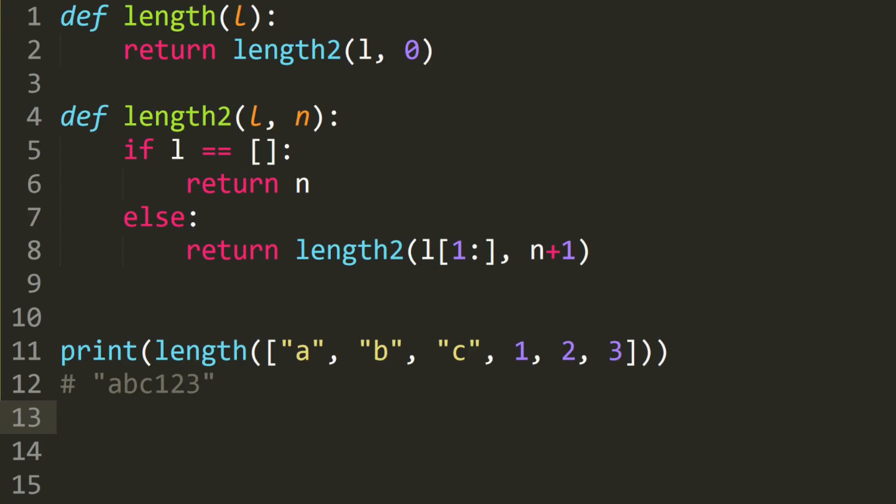In the next video, I'm going to show you how to convert a list into a string using recursion. So for example, if we have this list, then the output should be the string abc123. And I'm going to show you how to do this in the next video.